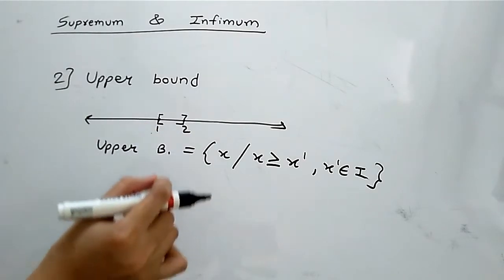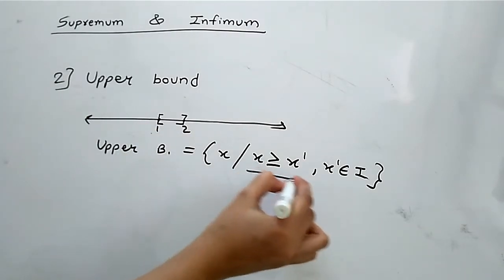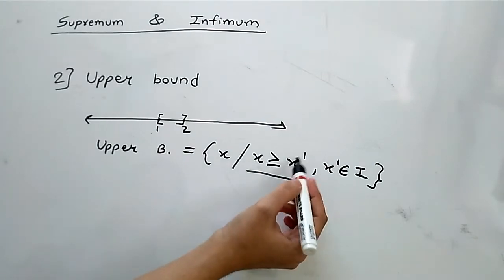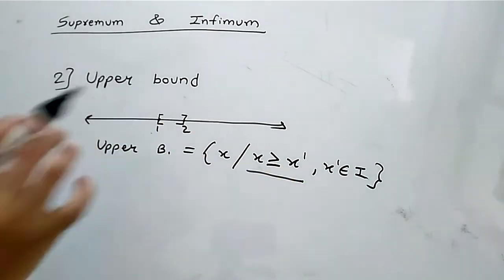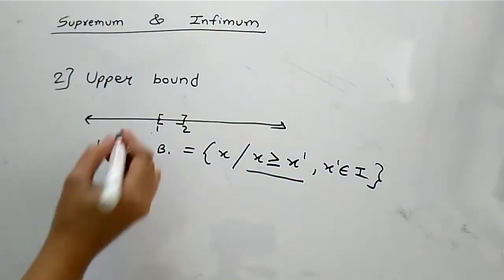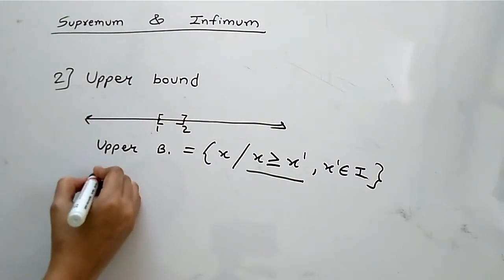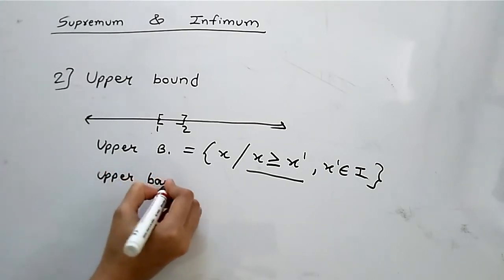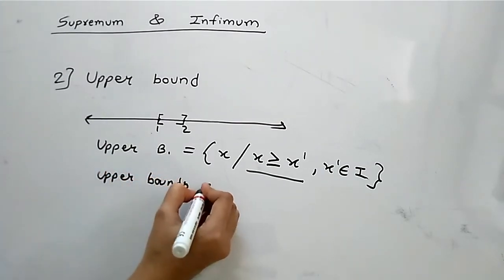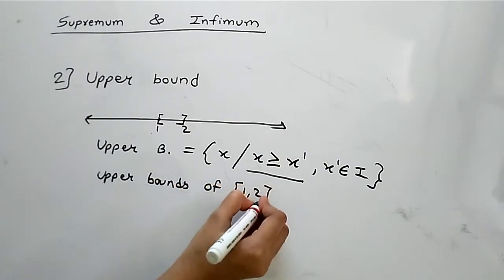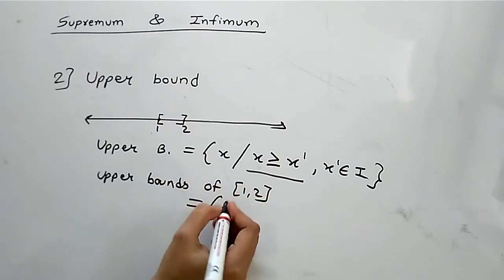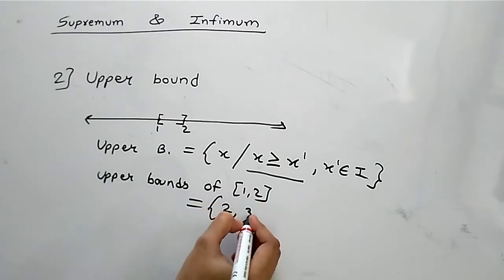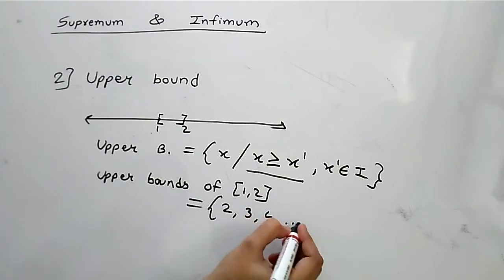Upper bounds are the elements x that are greater than or equal to all other elements belonging to that interval. For the closed interval [1, 2], the upper bounds are 2, 3, 4, and so on.